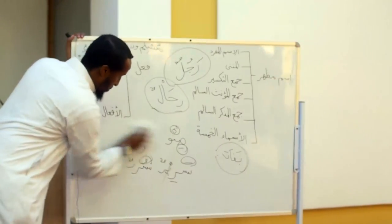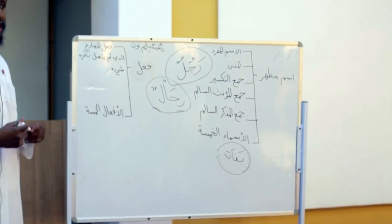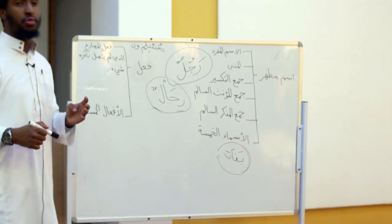Now we're going to swiftly move on to the Fi'l al-Mudari'. Let's break the term up. Al-Fi'l al-Mudari' — we all know what Fi'l al-Mudari' is. Fi'l al-Mudari' is anything that starts with the za'id al-arba' — these four letters that go before it: alif, nun, ya, and ta' — which we bring together and is called 'Anaytu'.